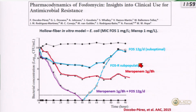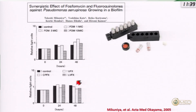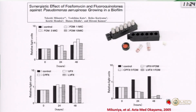In a hollow fiber model with planktonic E. coli susceptible to both meropenem and fosfomycin: fosfomycin alone causes an initial fall in bacteria followed by regrowth from resistance amplification, confirming monotherapy leads to treatment failure; meropenem alone performs very well; meropenem plus fosfomycin is synergistic with no regrowth. In a biofilm reactor with Pseudomonas aeruginosa: after 48 hours, monotherapy with either fosfomycin or quinolones showed no decrease in biofilm-embedded bacteria, whereas the combination of fosfomycin plus quinolones was very effective.